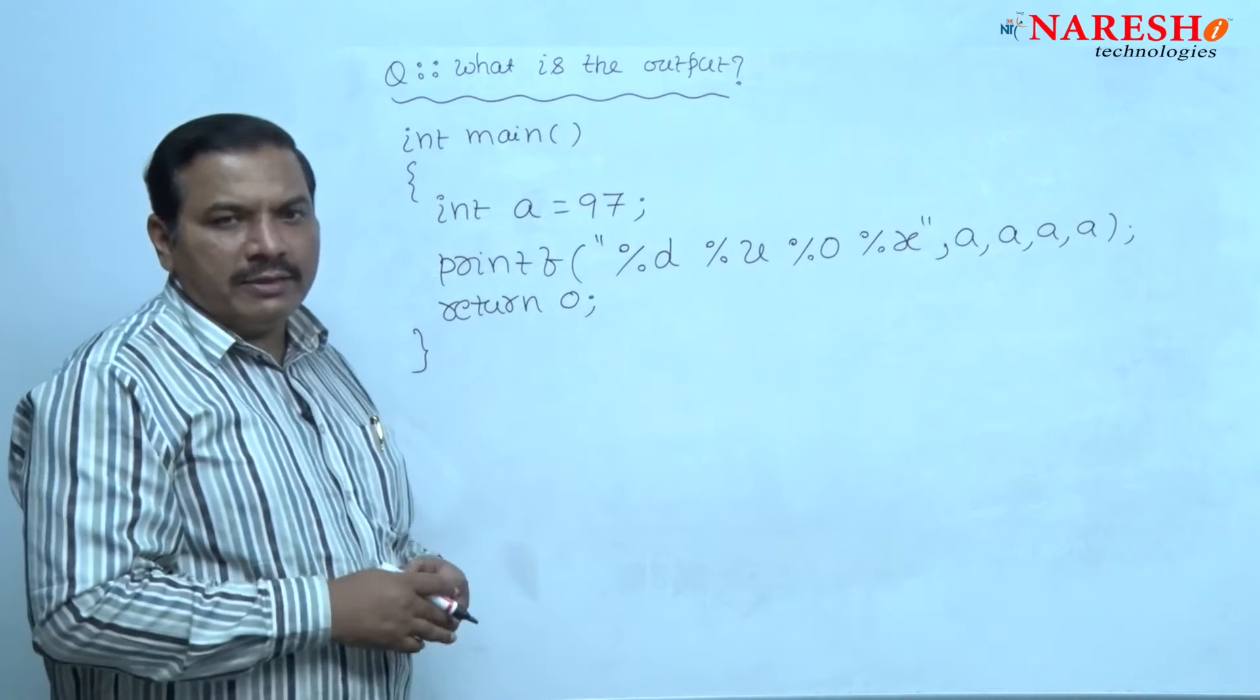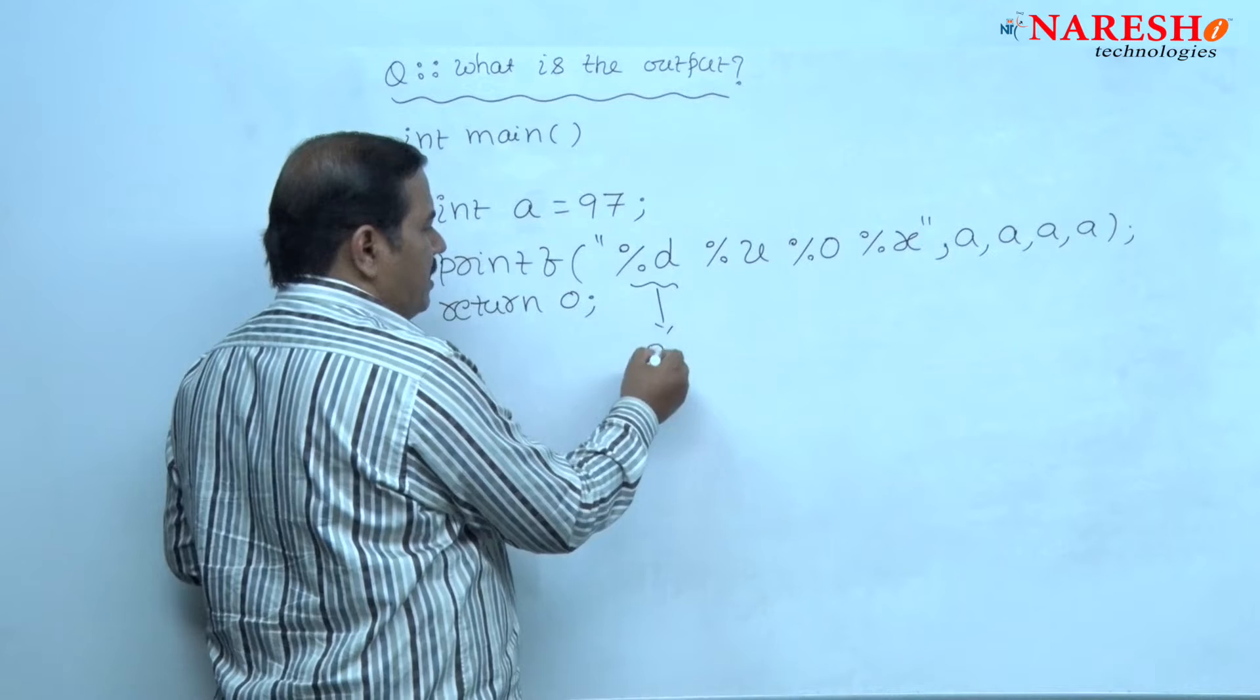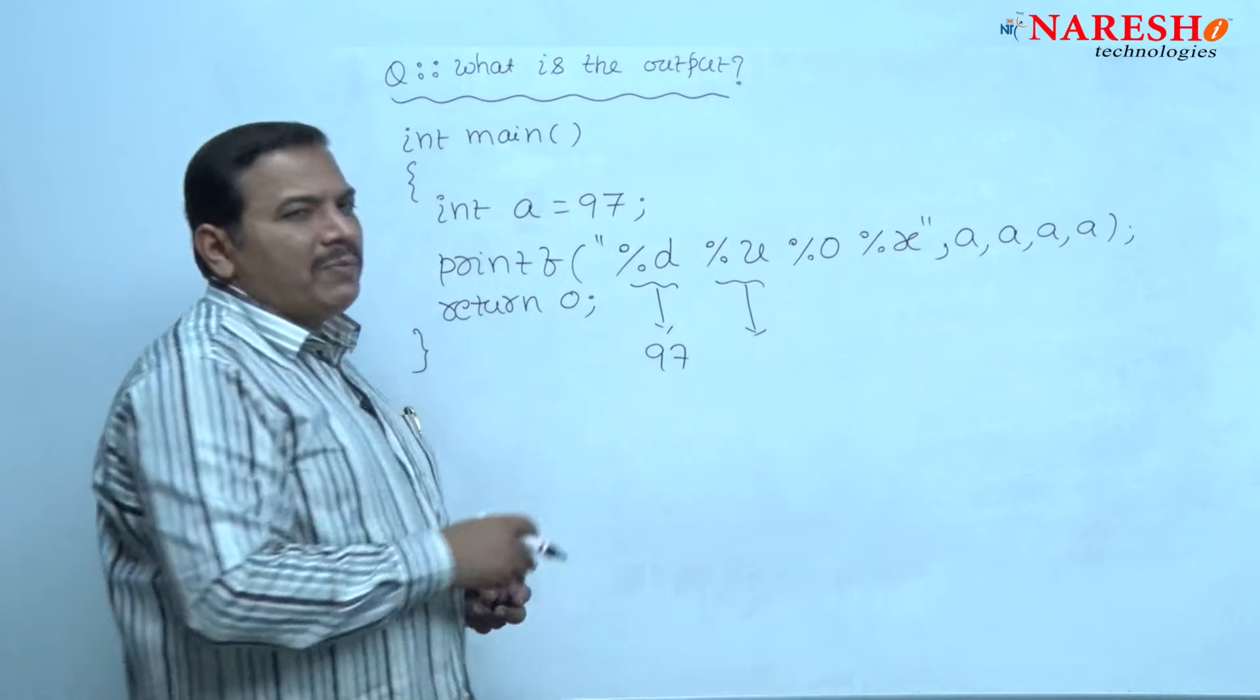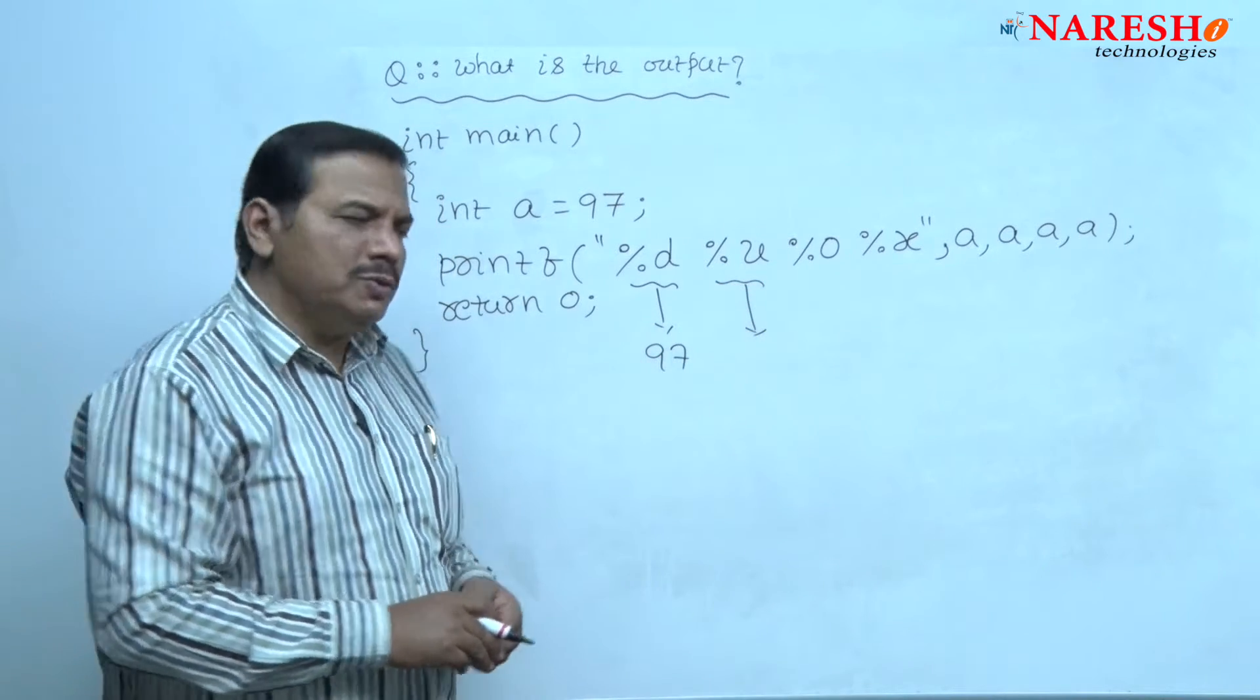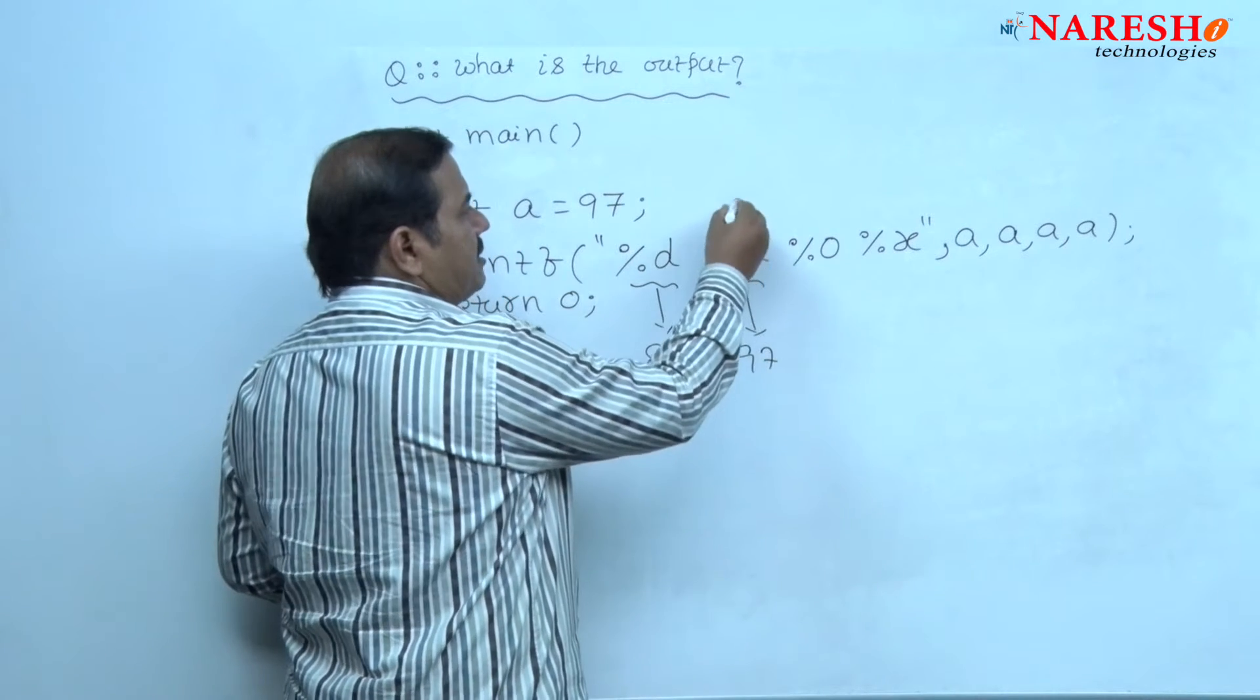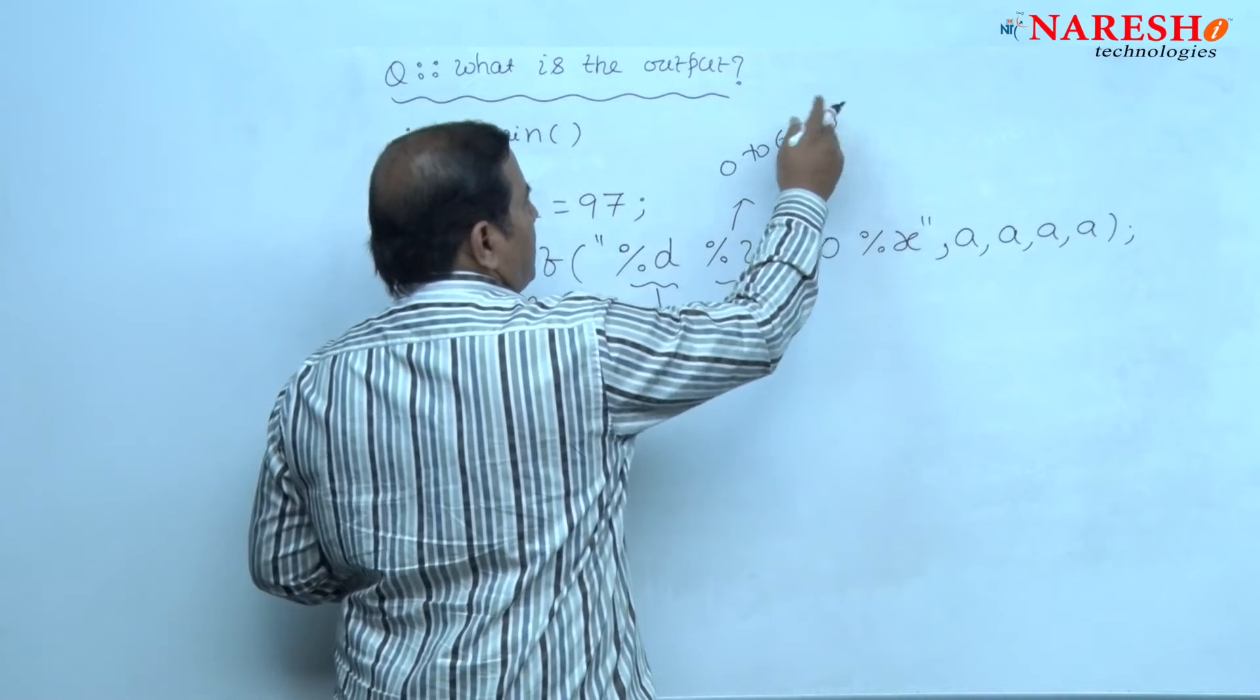If we are using the format code %d, the same number 97 is printed. Even if we are using format specifier %u, 97 is printed. Because unsigned integers range is 0 to 65535.